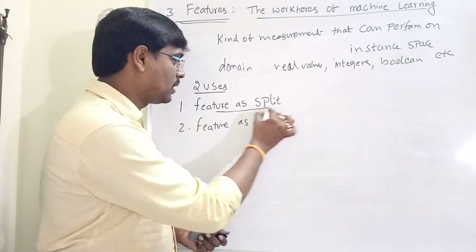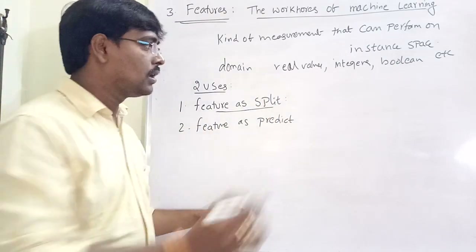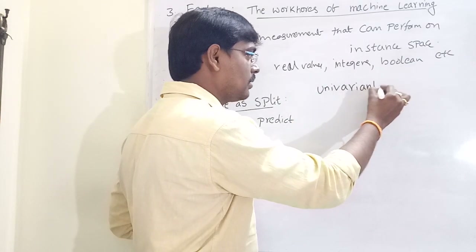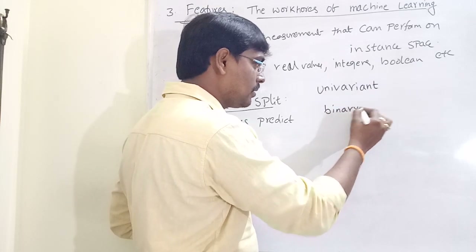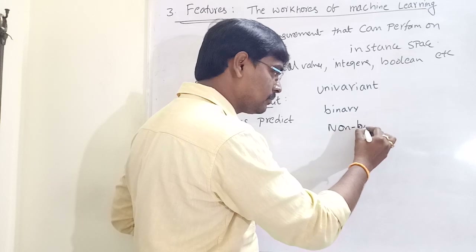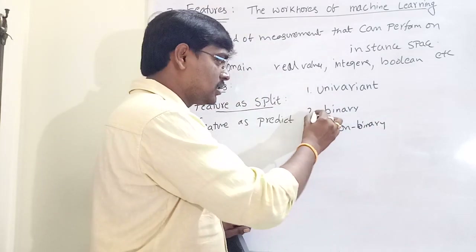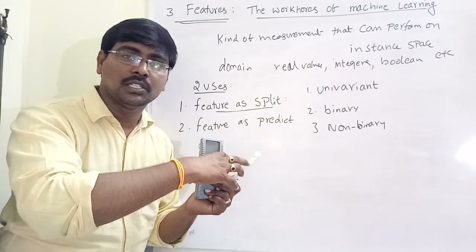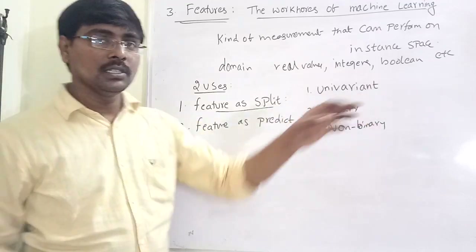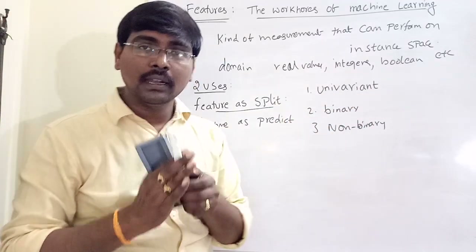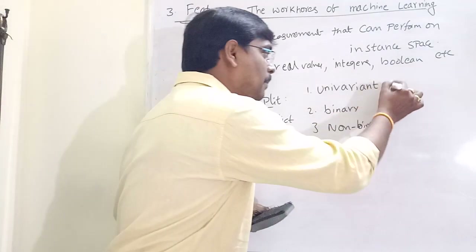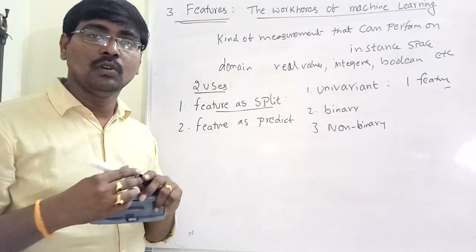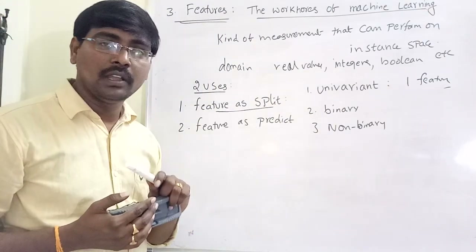For feature as split, we generally have different models: univariant model, binary model, and non-binary model. A univariant model means we are constructing a model by using only a single feature. That is called a univariant model. Generally, using only a single feature is not preferable.